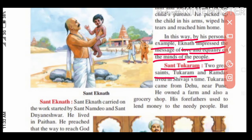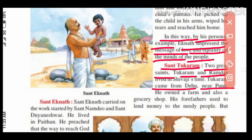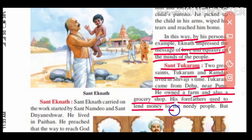The great Sant Tukaram and Ramdas lived in Shivaji's time — he doan great Sant Shivaji Maharajanchya kalat hote. Tukaram came from Dehu, near Pune. He owned a farm and also a grocery shop — tennacha swatachya ek dhannachya dukan hota ani swatachi sheti pun hoti. His forefathers used to lend money to needy people — tennacha vaddil adlianna, garib gorgari lokanna karja det asad.